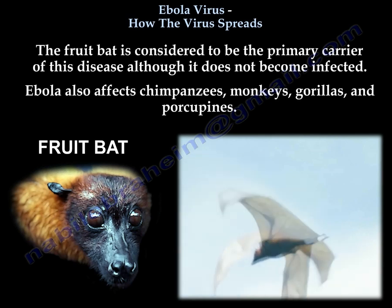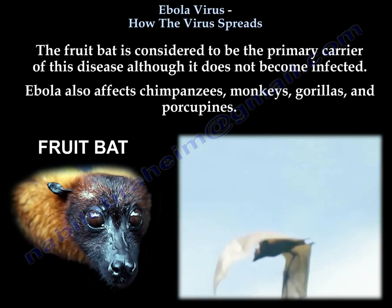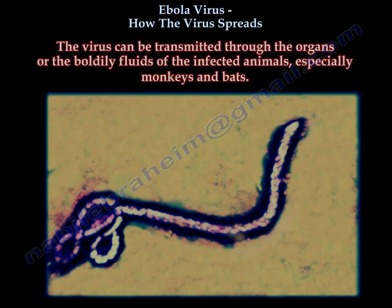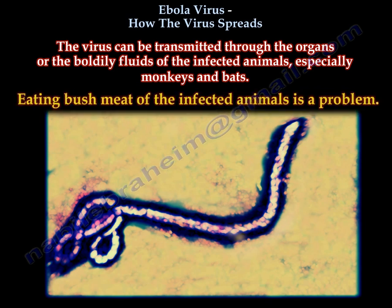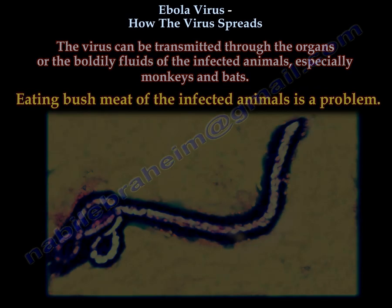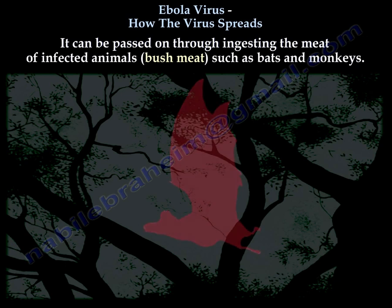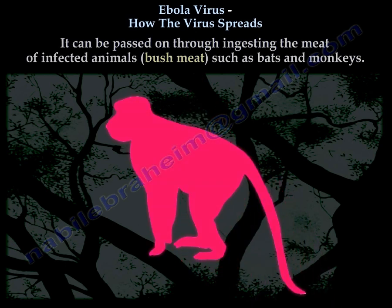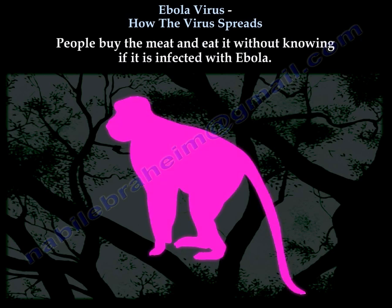The fruit bat is considered to be the primary carrier of this disease, although it does not itself become infected. Ebola also affects chimpanzees, monkeys, gorillas, and porcupines. The virus can be transmitted through the organs or bodily fluids of infected animals, especially monkeys and bats. Eating bush meat of infected animals is a problem. In these tropical areas, some people have become accustomed to eating monkey meat, buying and consuming it without knowing if it is infected with Ebola.